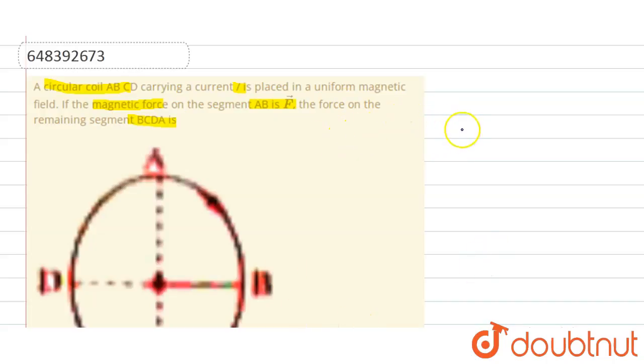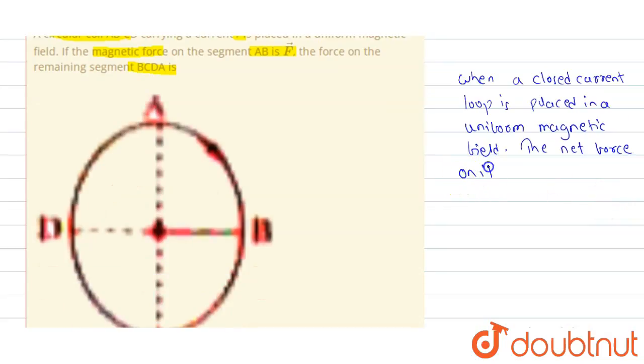Now we know, students, when a closed current loop is placed in a uniform magnetic field, the net force on it is always zero.